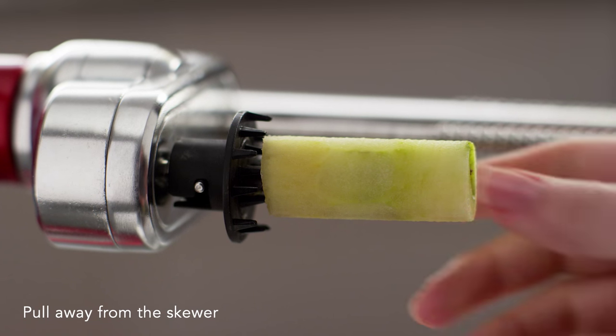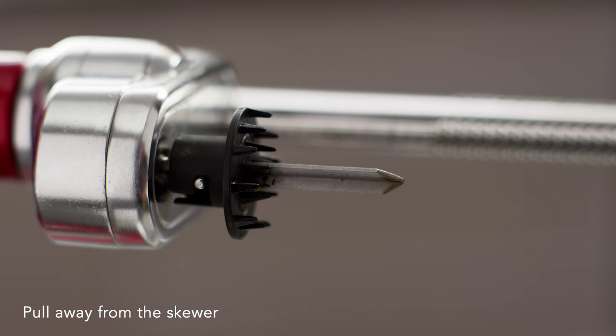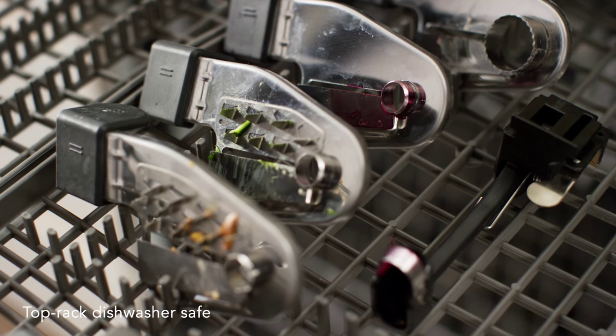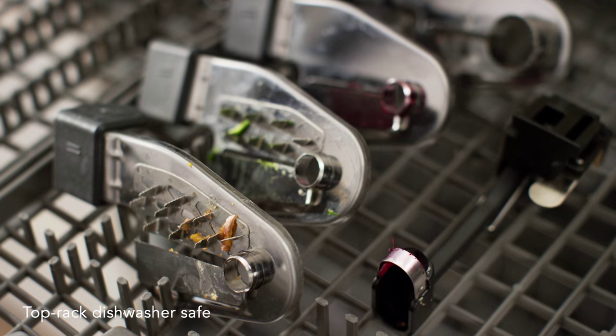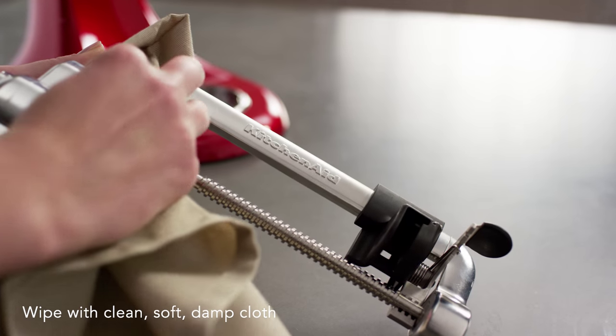To remove remaining food, firmly grip the fruit or vegetable and pull away from the fruit and vegetable skewer. Twist the skewer clockwise to unlock it and remove for cleaning. All accessories are top rack dishwasher safe. Wash the spiralizer body by hand only with a soft damp cloth.